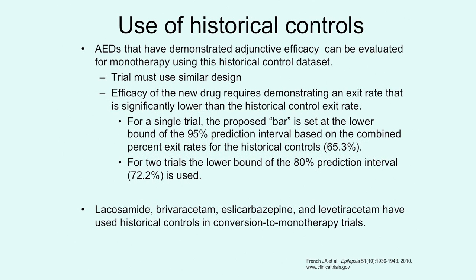The question arose when using historical controls: where do you set the bar? It has been proposed that for a single trial, the bar is set at the lower limit of the predicted interval of 95 percent, which is a 65 percent rate based on historical controls. So a new drug would have to have an exit rate of lower than 65 percent in order to be deemed effective.